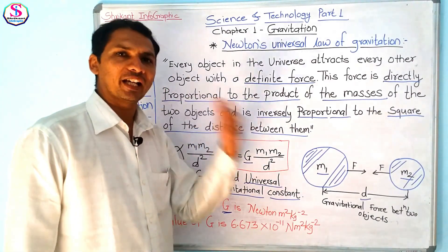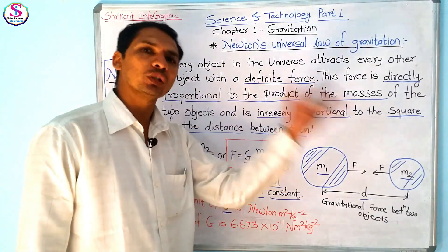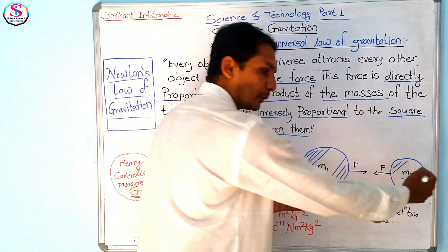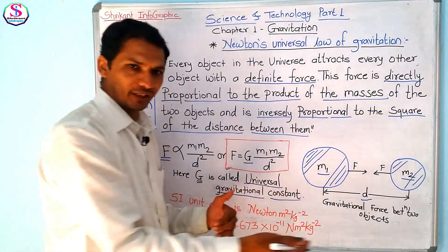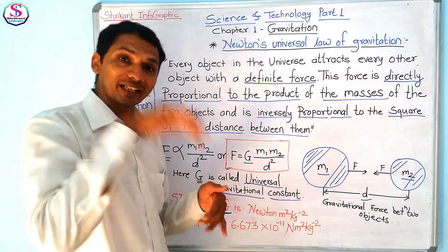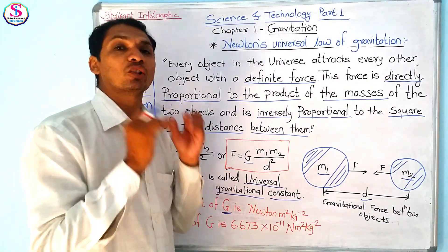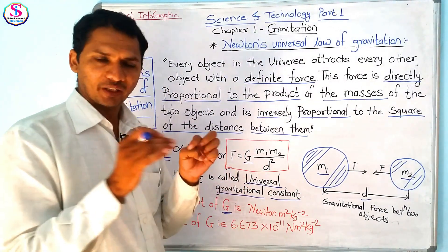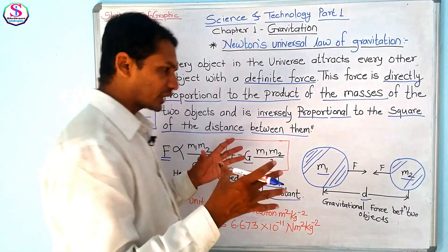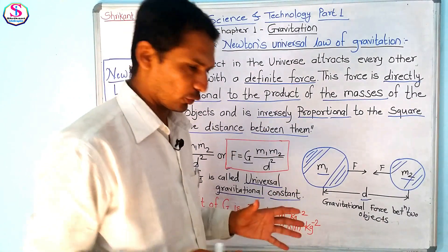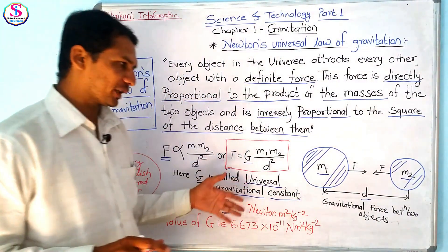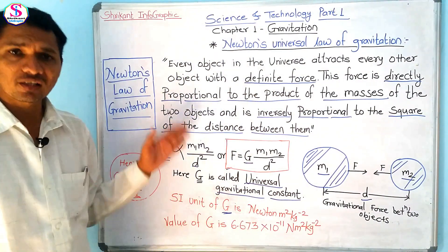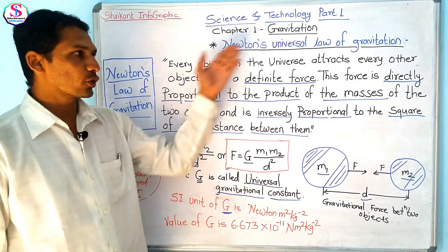Looking at the formula: if the masses are doubled, then the force will also double, because force is directly proportional to the masses. But if the distance between them is doubled, then the force will decrease by a factor of 4. So gravitational force is actually a very weak force, but it controls the whole universe.